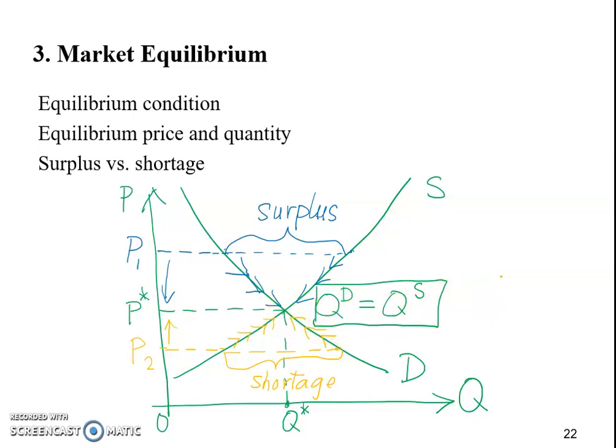So the point we want to get across here is sometimes people say the economist is just too naive. We believe the market is always at the equilibrium. The market is always clear. That is the misunderstanding. We come up with the equilibrium condition or the market equilibrium not because we really believe the market is always going to be there.